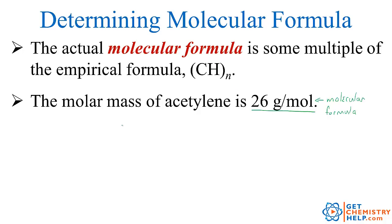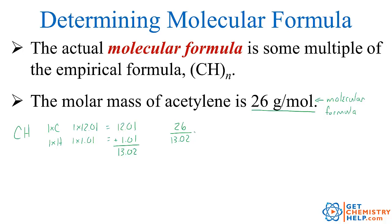The mass of empirical formula CH: one carbon at 12.01 plus one hydrogen at 1.01 gives a total of 13.02. The molar mass given is 26 grams per mole. So 26 divided by 13.02 is basically twice as big, which means the formula itself must be twice as big. Take the empirical formula and multiply through by 2: the molecular formula must be C2H2. Since the molecular formula mass was twice that of the empirical formula, the formula itself is twice the empirical formula.